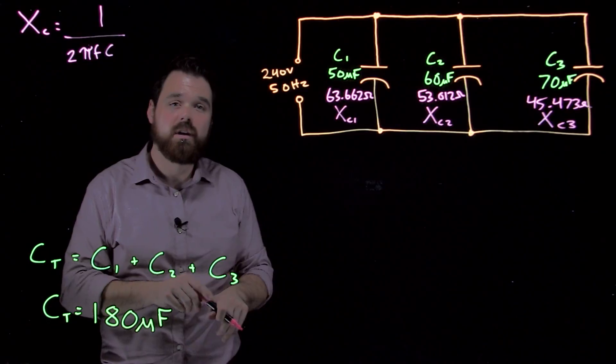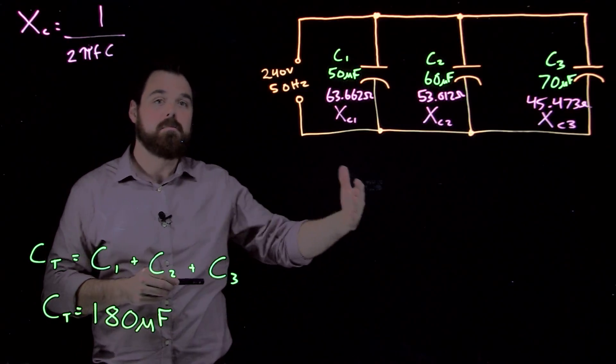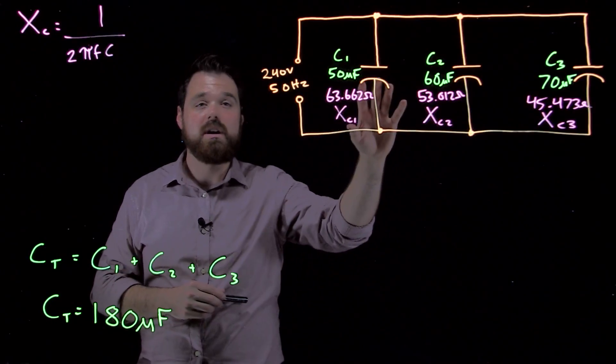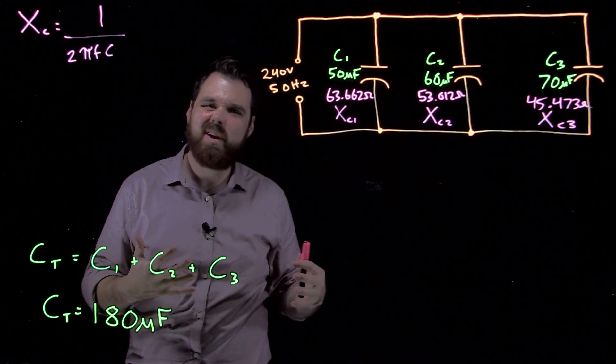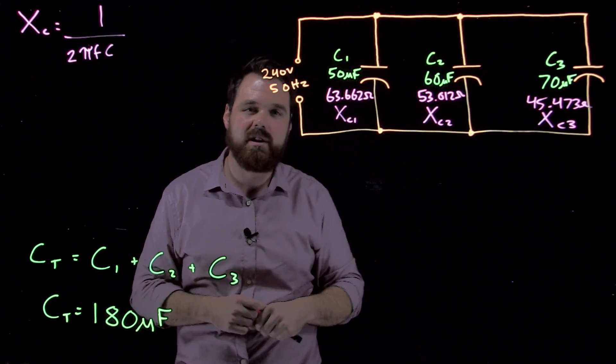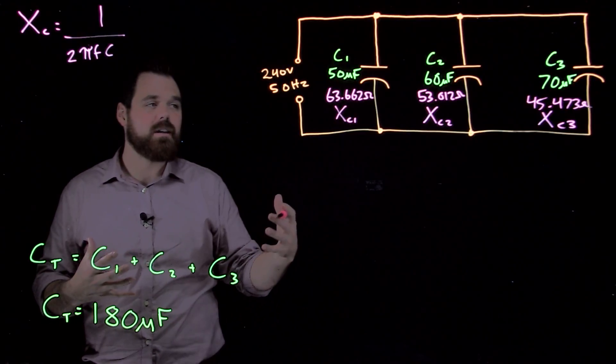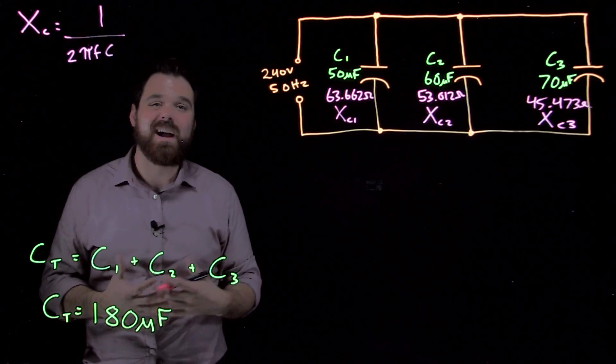Having that information would allow us to go further and figure out the current flowing in branch one knowing the voltage and the opposition to current flow if we wanted to. At the end of the day, letting us figure out the current total. But what I want to look at is how we figure out our XC total.